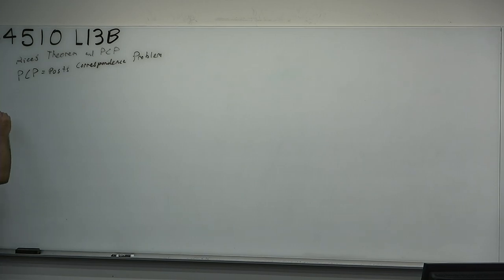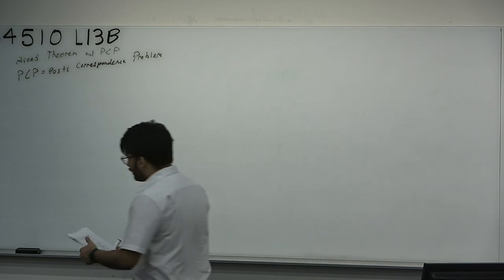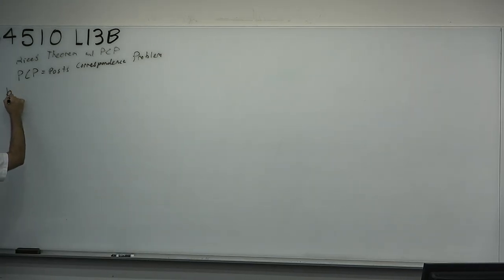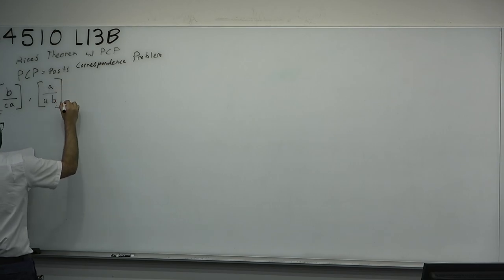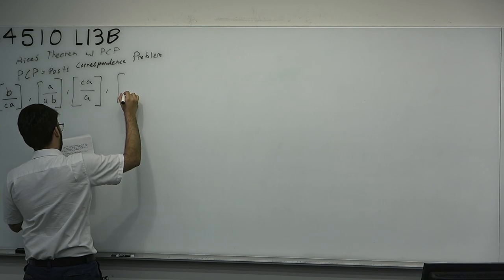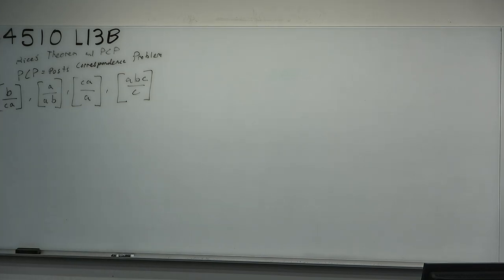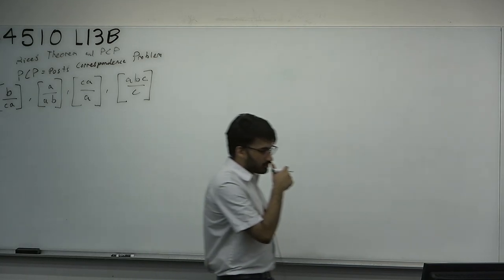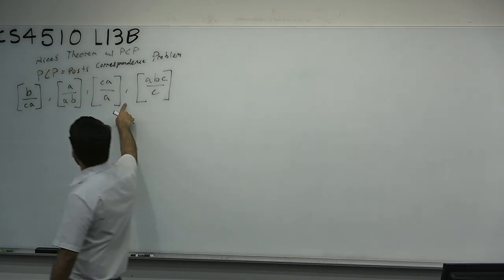Given a set of tiles or dominoes which have strings on the top and bottom — for example, tiles like A/BCA, BCA/AAB, CAA/CAA, or AB/ABC — you're given unlimited copies of each tile and asked if there exists a sequence of the tiles which form a match. By match we mean the concatenation of the tops in the chosen order equals the concatenation of the bottoms.